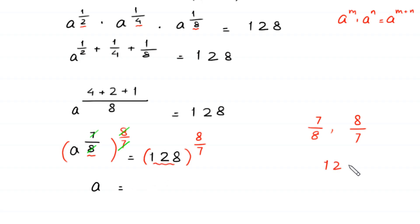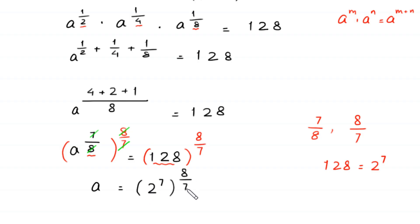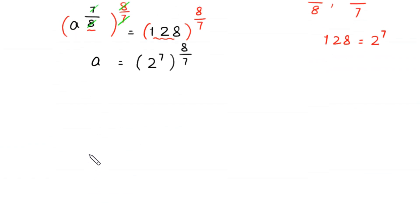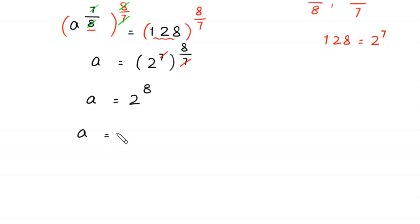This 128 is equal to 2 to the power 7, so we replace 128 with 2 to the power 7: (2^7) to the power 8/7. When we multiply power 7 by power 8/7, this 7 cancels out with this 7, and on the right side we are left with 2 to the power 8. So a is equal to 2 to the power 8, which equals 256.